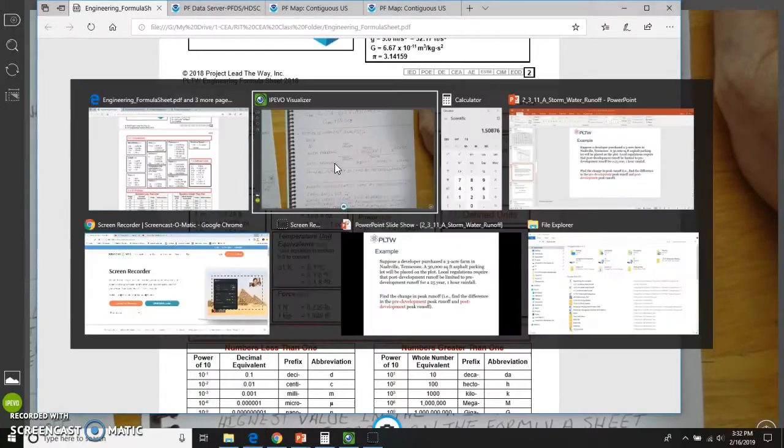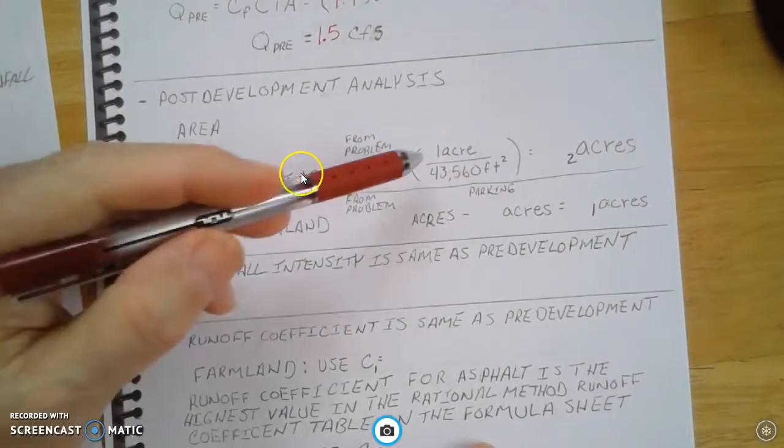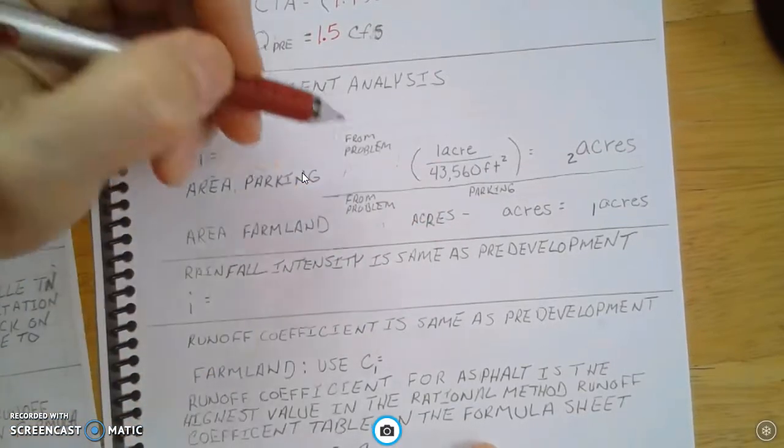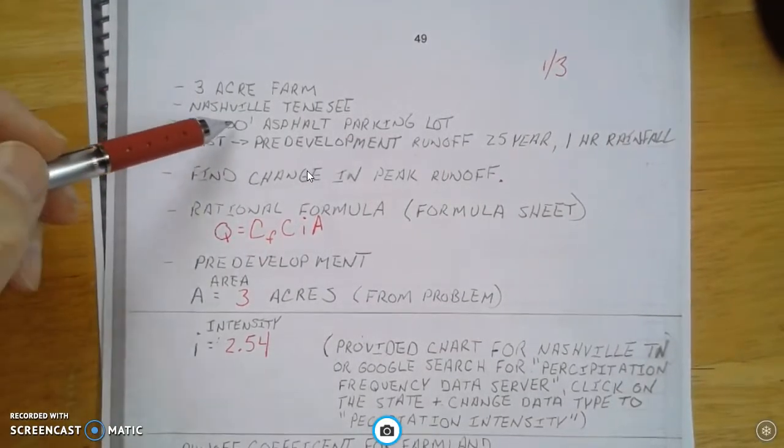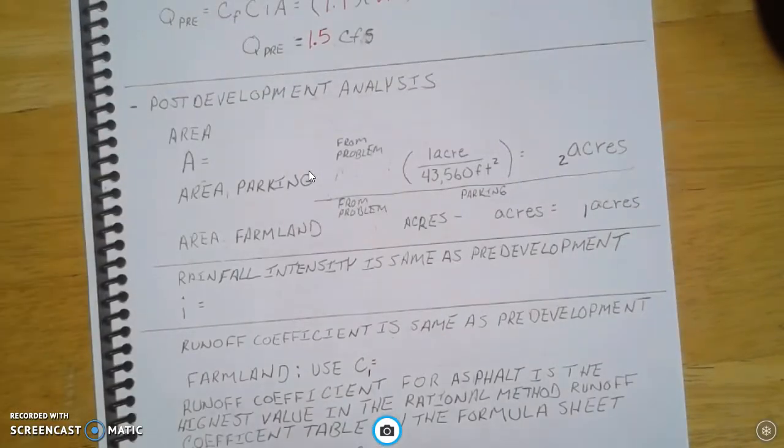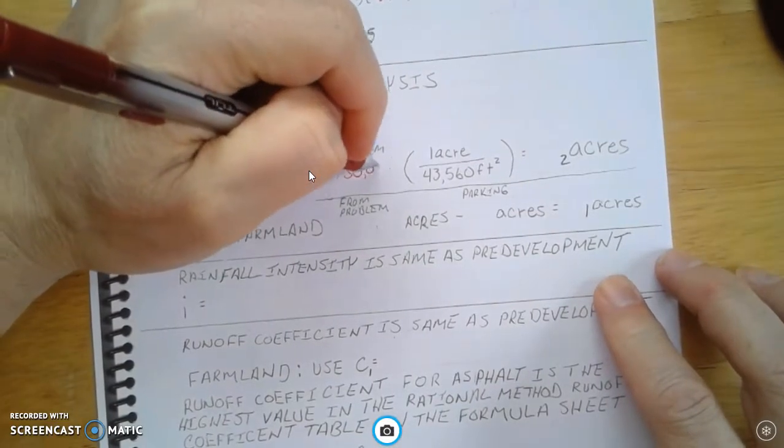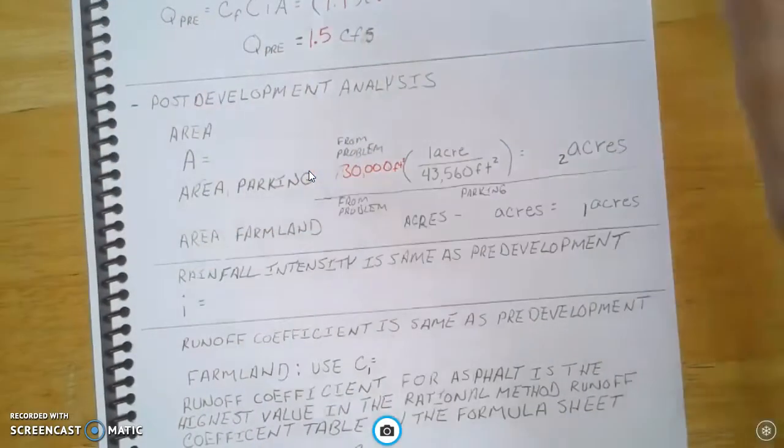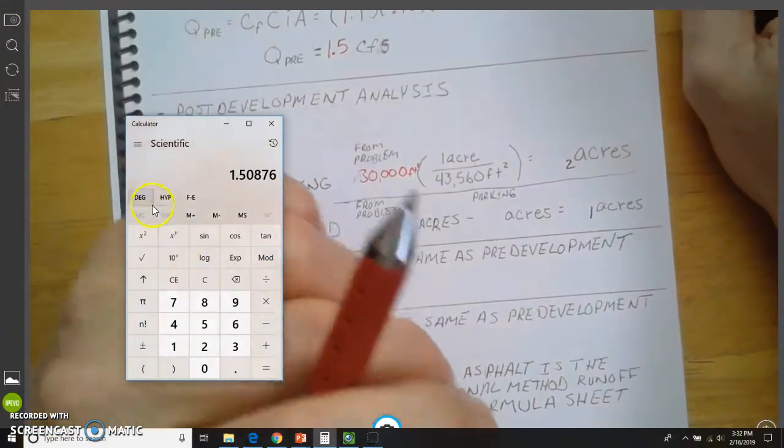So back to our problem. That's why I wrote one acre over 43,560 feet squared. And from the problem, we know that this parking lot is going to be 30,000 square feet. So I'm going to take and fill that in right here. We're going to cancel this, escape out of this.